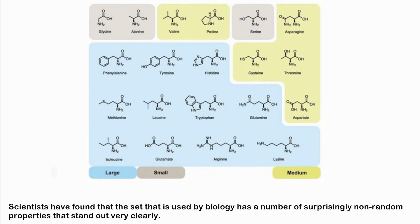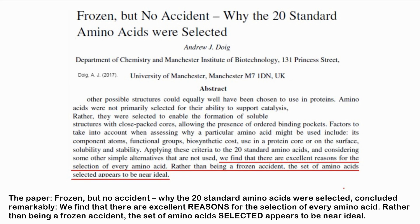Scientists have found that the set used by biology has a number of surprisingly non-random properties that stand out very clearly. The paper 'Frozen but No Accident: Why the 20 Standard Amino Acids Were Selected' concluded remarkably: we find there are excellent reasons for the selection of every amino acid — rather than being a frozen accident, the set of amino acids selected appears to be near ideal.